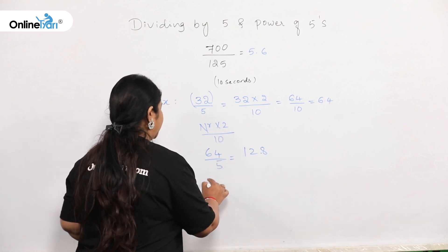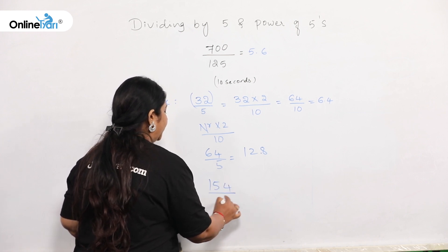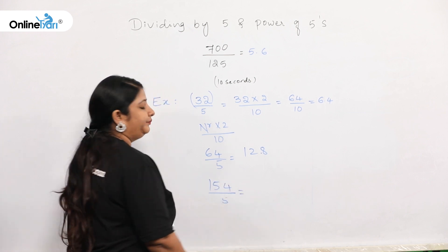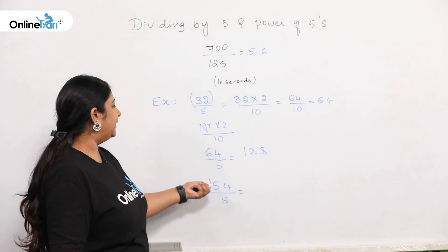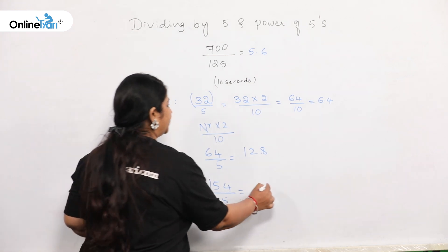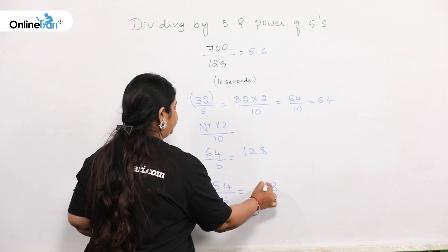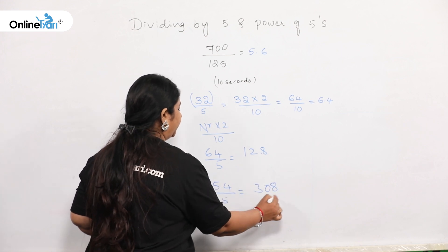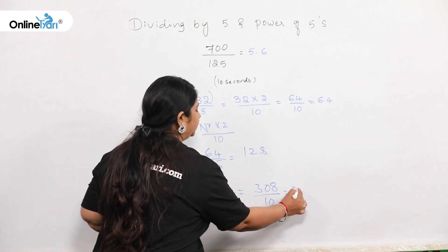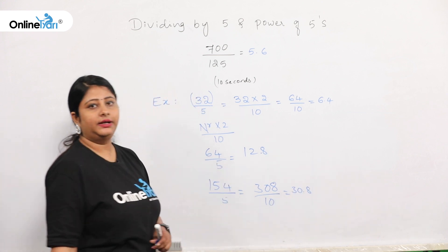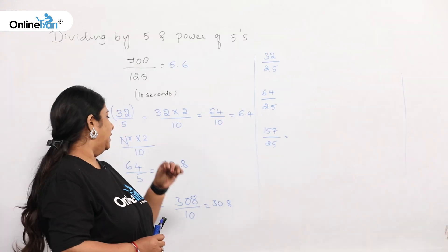Let's take a bigger number: 154 divided by 5. How do you do it? 154 × 2 = 308, divided by 10, which is 30.8. That's it.